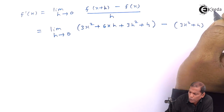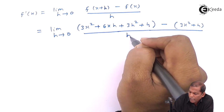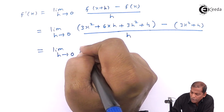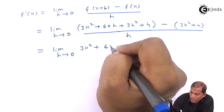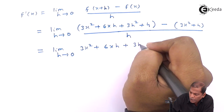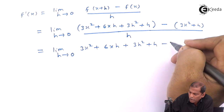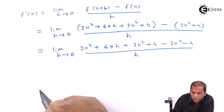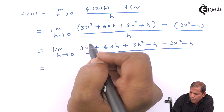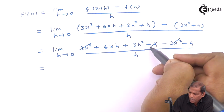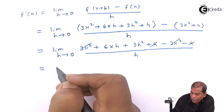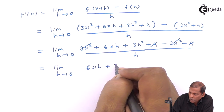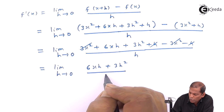By the first principle of derivatives, we write the formula and substitute f(x+h) minus f(x), all divided by h. For f(x+h) we substitute 3x² + 6xh + 3h² + 4 in the first bracket, then minus f(x), which means 3x² + 4 in the second bracket, and the whole thing is divided by h. On simplifying the brackets we get: limit h→0 of (3x² + 6xh + 3h² + 4 − 3x² − 4) divided by h.